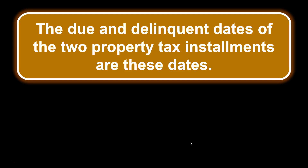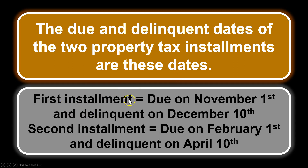The due and delinquent dates of the two property tax installments are as follows. The property tax year starts July 1st. The first installment is due November 1st and delinquent December 10th. The second installment is due February 1st and delinquent April 10th. A good way to remember these dates is 'No Darn Fooling Around' — November, December, February, April.